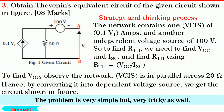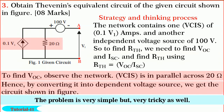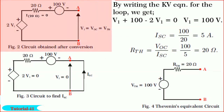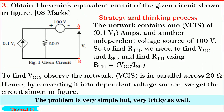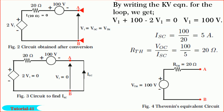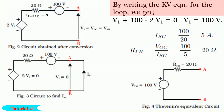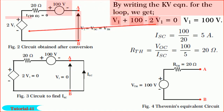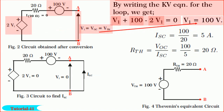Let us first find VOC. Consider the given network. Since the dependent current source is in parallel across 20 ohm, by converting it we get the circuit shown in figure. Note the polarity of the voltage-controlled voltage source is such that it drives current in the same direction as the original dependent current source. Also note that since terminals A and B are open, no current will flow through the 20 ohm resistance. By writing the Kirchhoff's loop equation, we get V1 plus 100 minus 2·V1 equals zero, so V1 — or V_th or VOC — is equal to 100 volts.